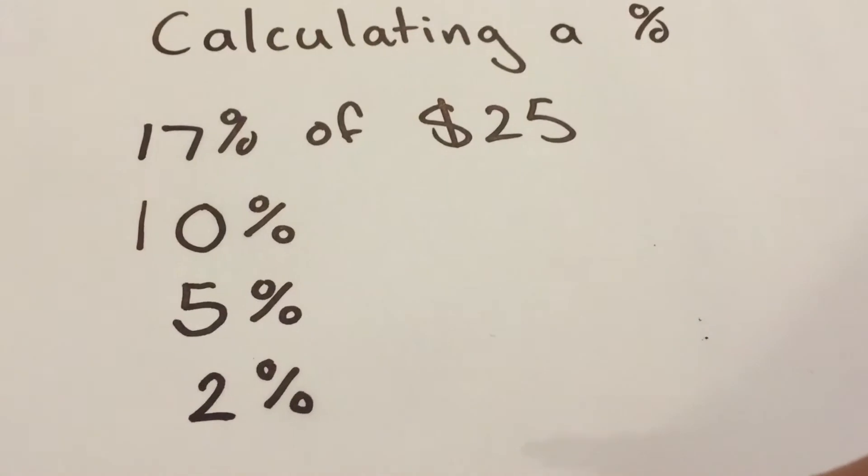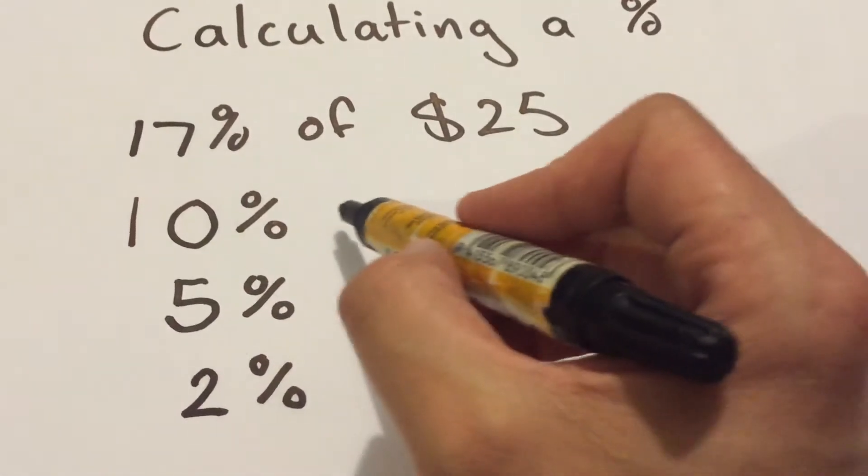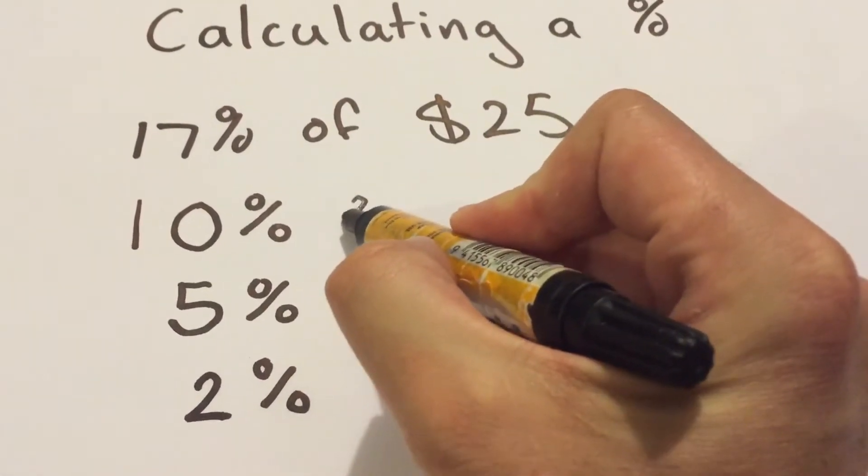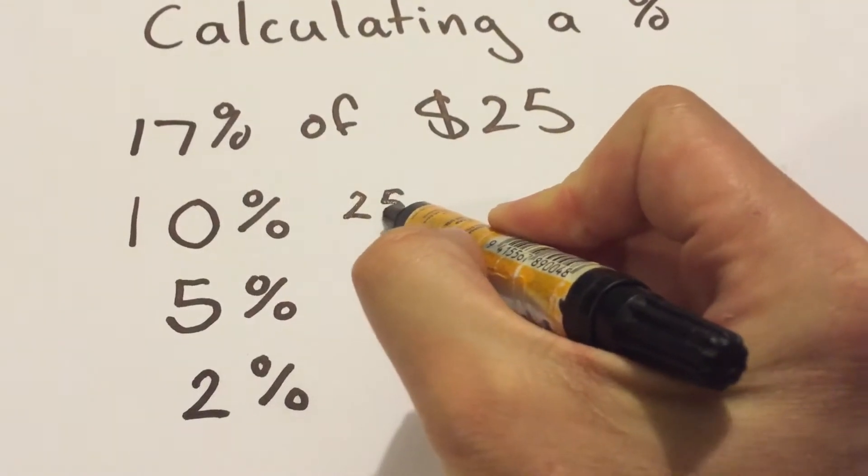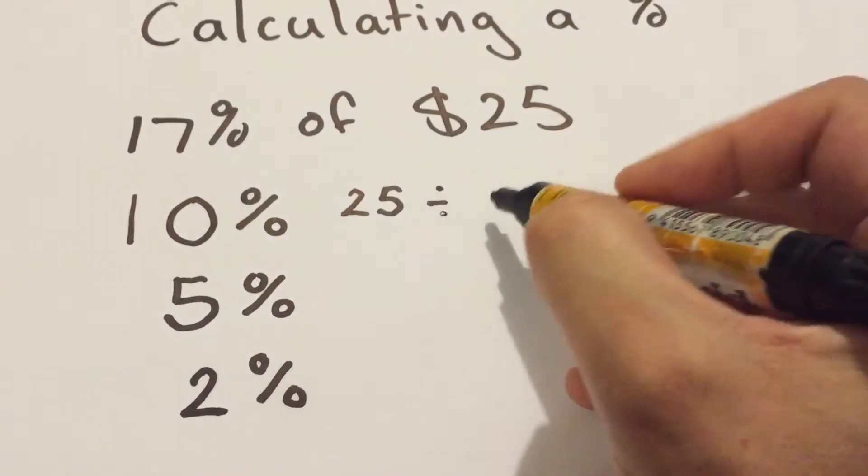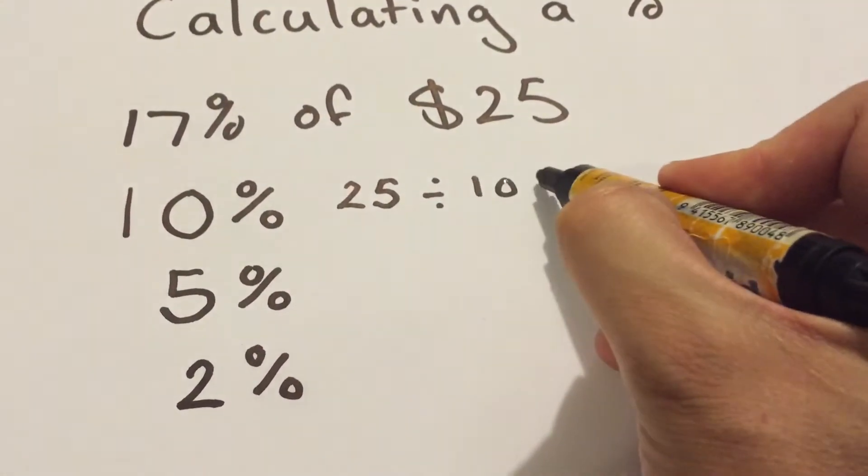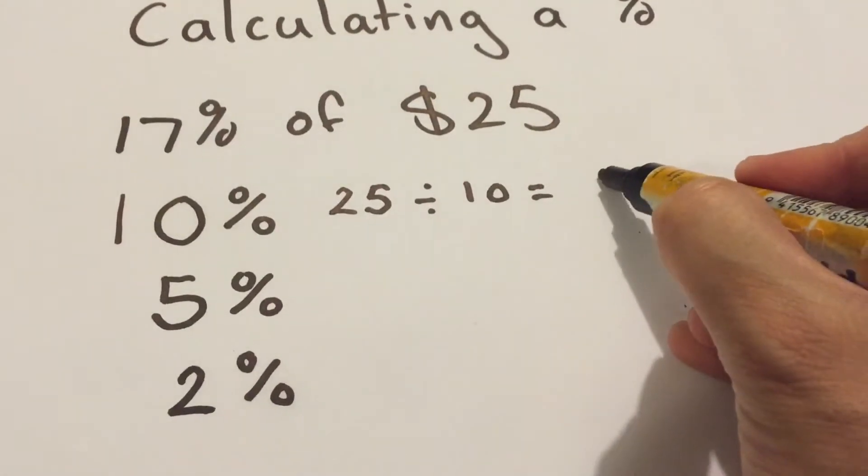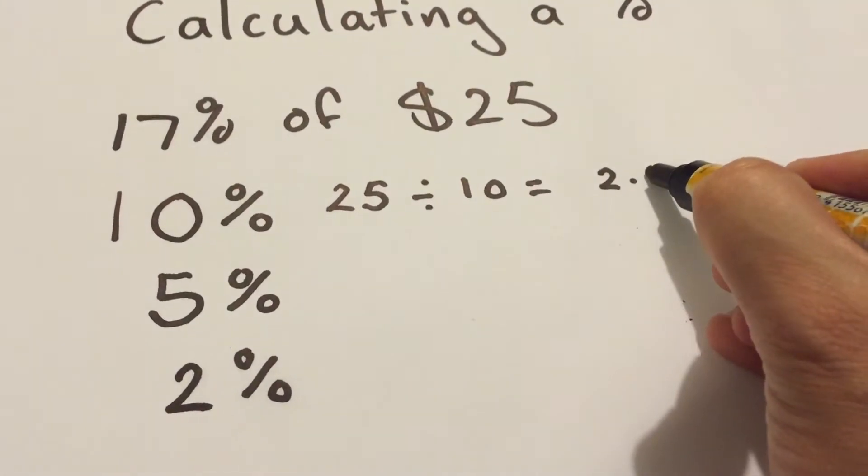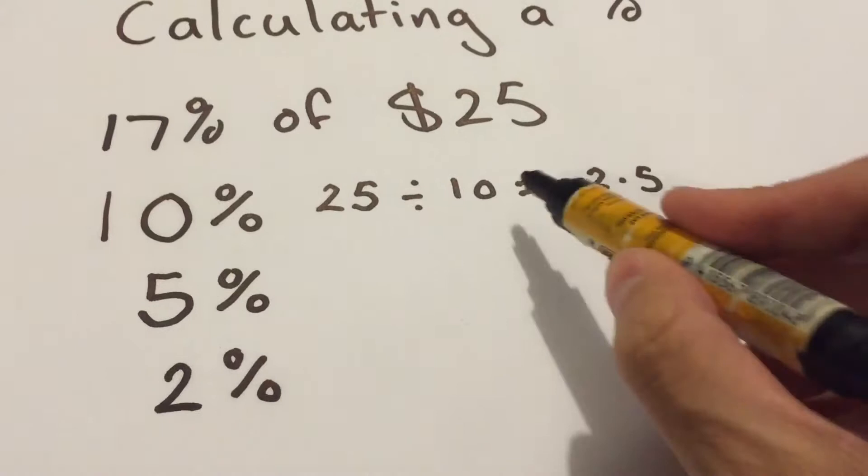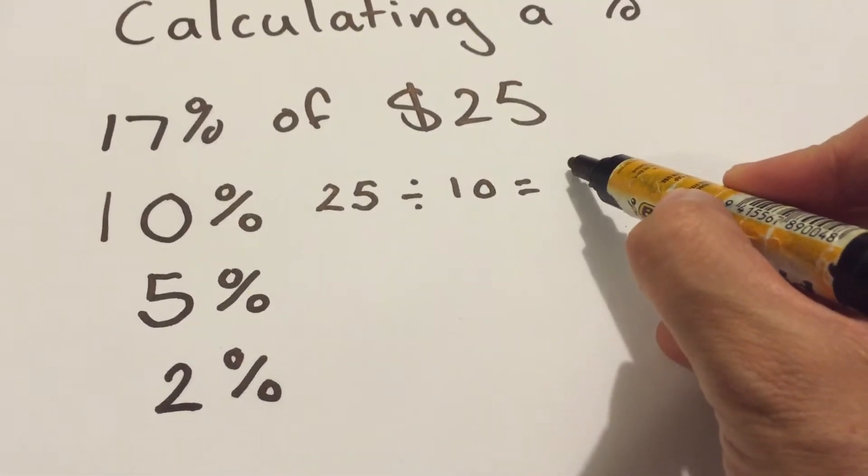First thing you're going to do though is your 10%. Your 10% is the easiest. It's just 25 divided by 10 equals 2.5. Pretty straightforward. Turn it back to your dollar amount if it's easier in your mind.